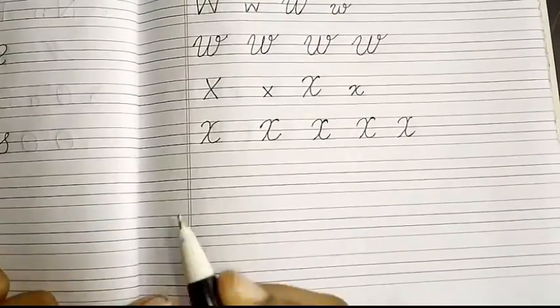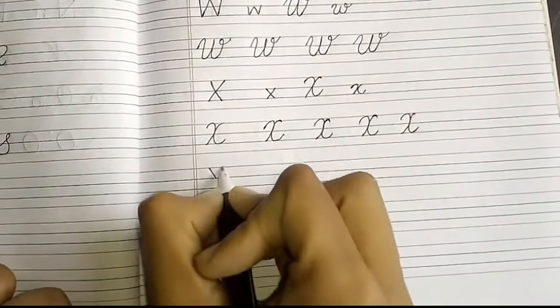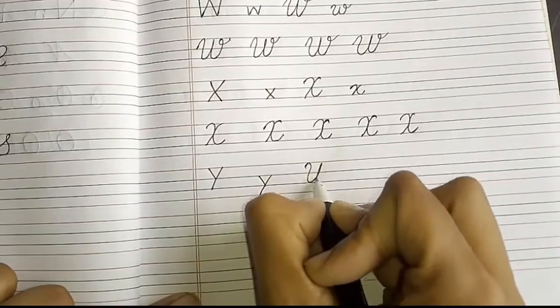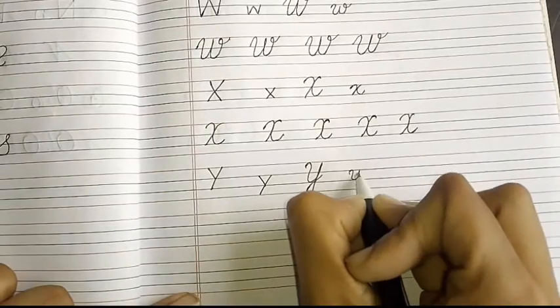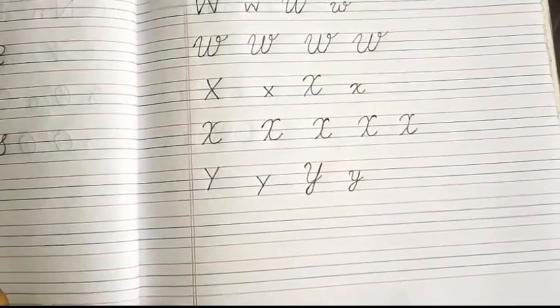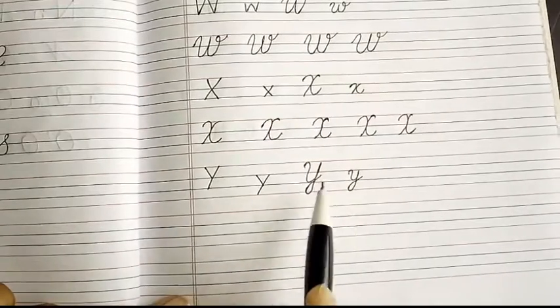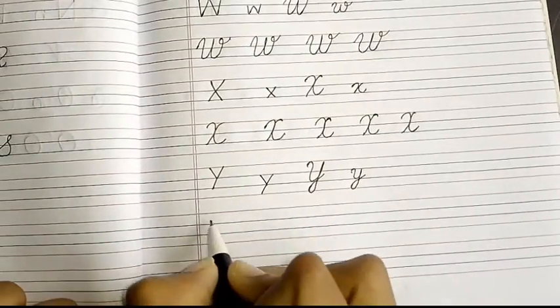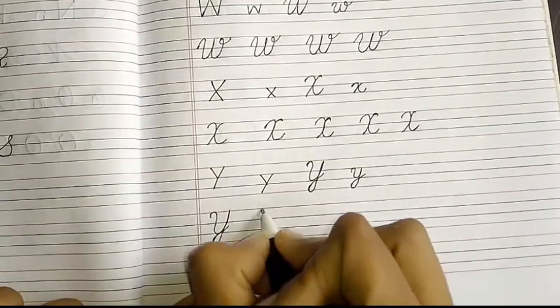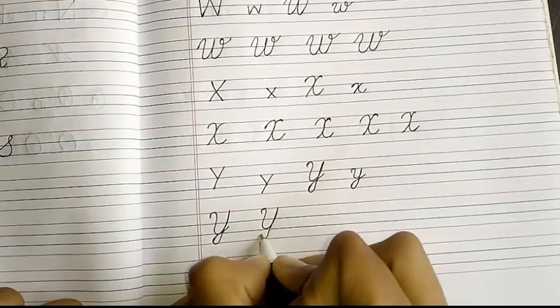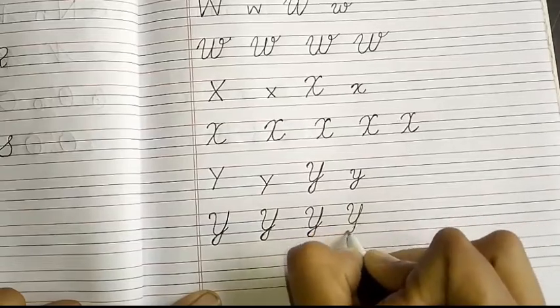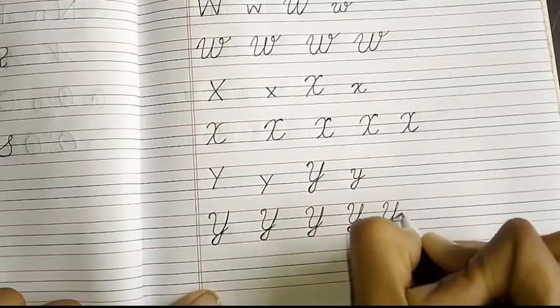Now we will write Y. Y, cursive capital Y, small Y. Now we will practice this cursive capital. Make a complete U, then just a line from below. Make a U, line from below. Simple.